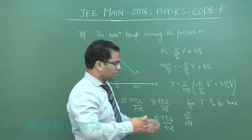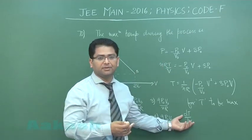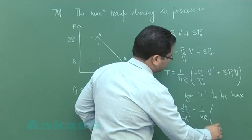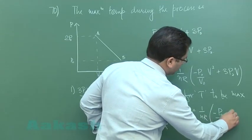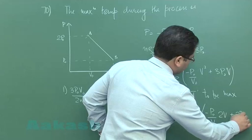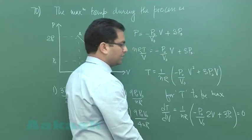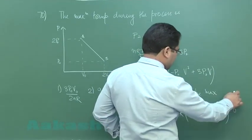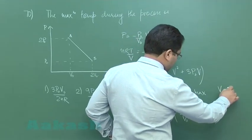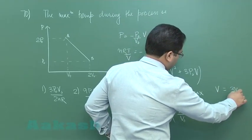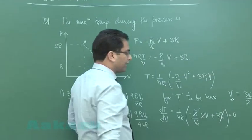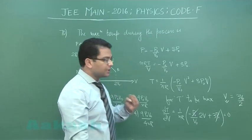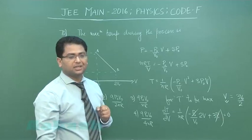That now comes out to be 1 by nR minus P_naught by V_naught into 2V plus 3P_naught equals zero. Here P_naught and P_naught would get cancelled, so I very easily get V equals 3V_naught by 2. So this is that particular volume when the temperature would be maximum.